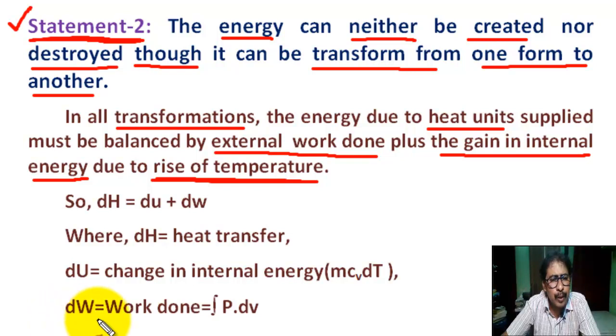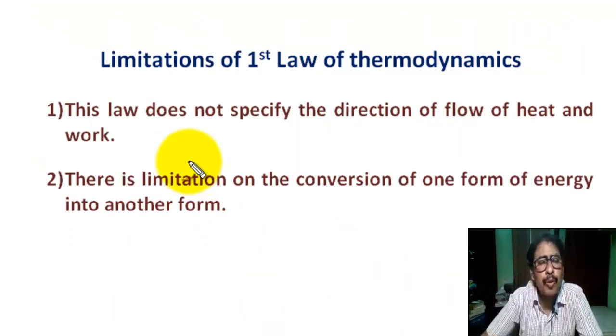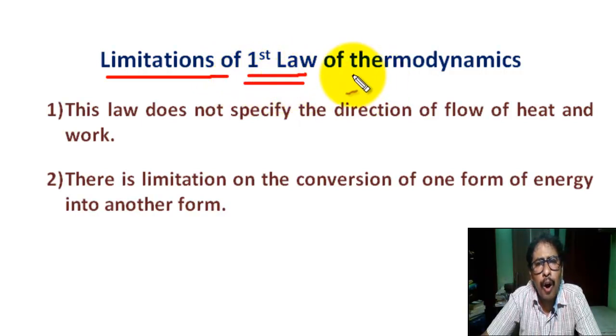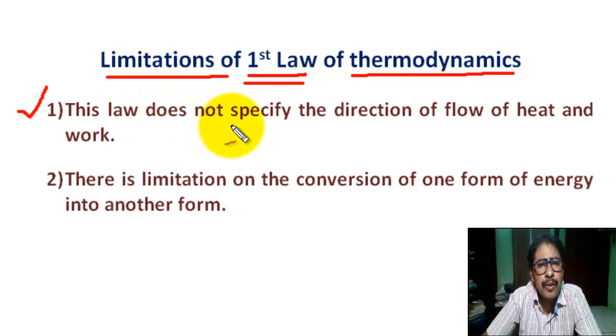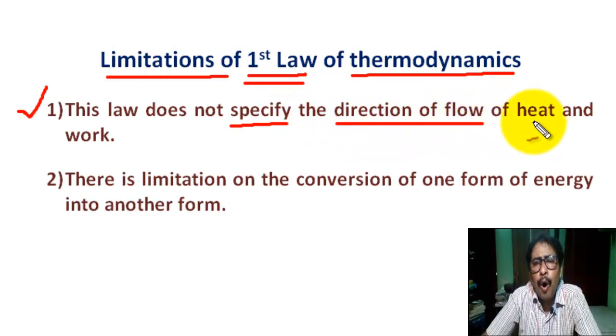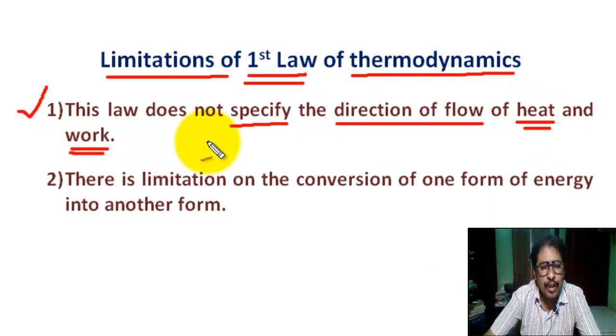Now what are the limitations of the First Law of Thermodynamics? Number one: This law does not specify the direction of flow of heat and work.